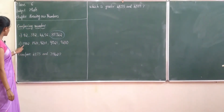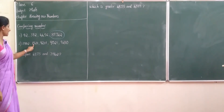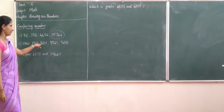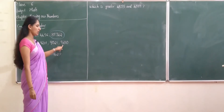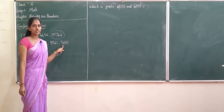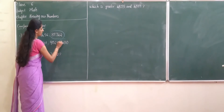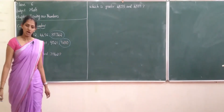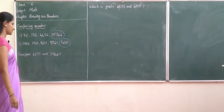Now what about: 902, 9,920, 9,2001, 9021, 902, 10 — which one is greater? Yes, this one is greater. You already did this in your previous classes.